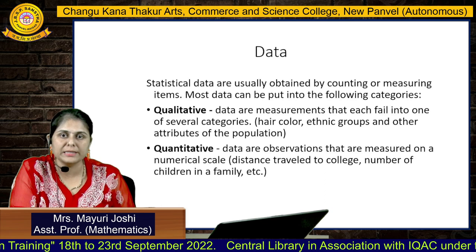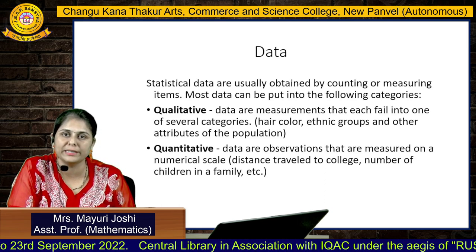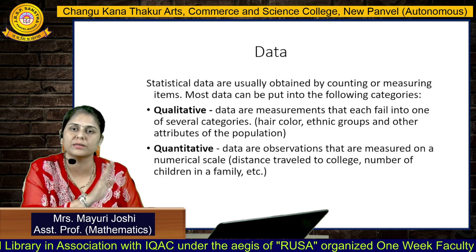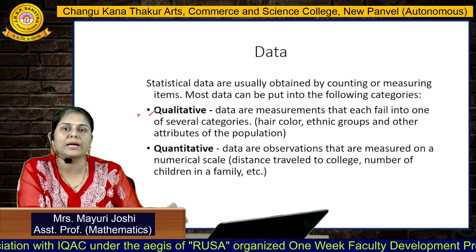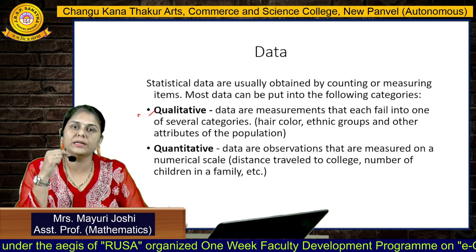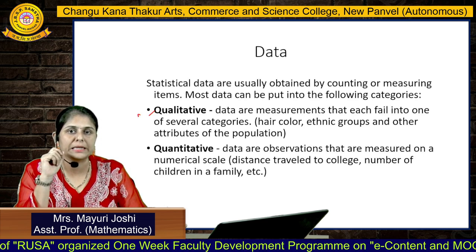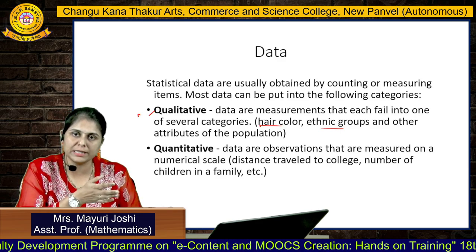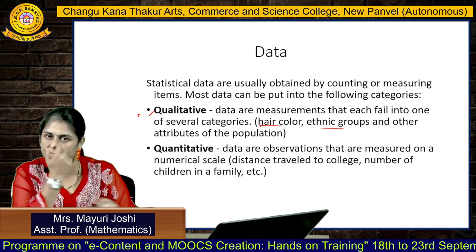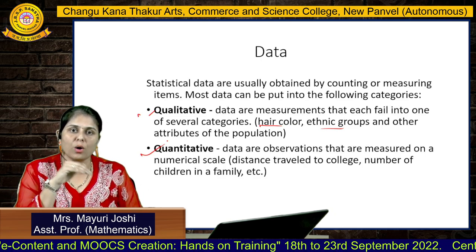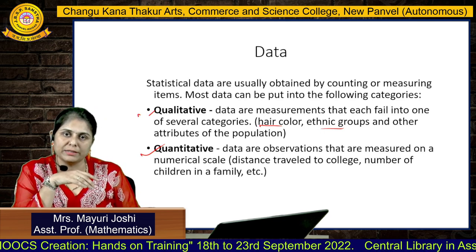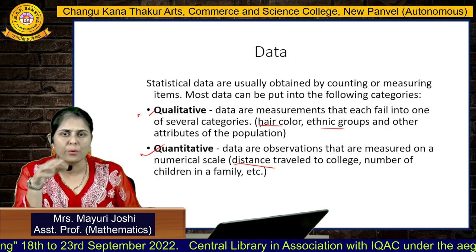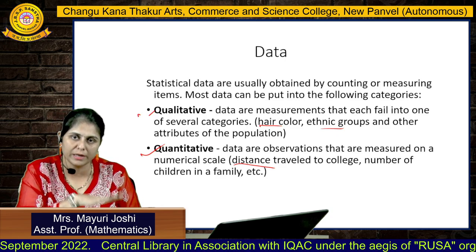Data has two types: qualitative data and quantitative data. Qualitative data means defining the data in a descriptive manner — in characteristics which are not in measurable form — such as hair color, ethnicity, beauty, or honesty. These are qualitative variables. Quantitative data is data that carries a numerical scale, such as distance traveled from college, number of children in a family, height, weight, and time.